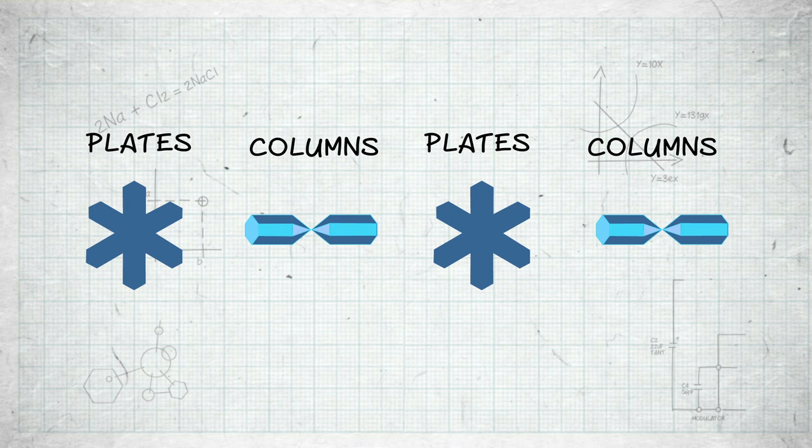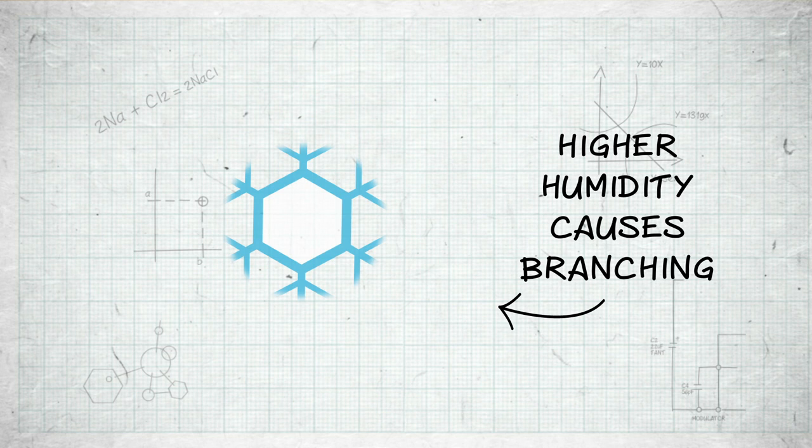Secondly, temperature. As the temperature increases, snowflake structure tends to go from plates to columns, then back to plates, and then back to columns again. But experts don't know exactly why this is. Changing conditions can lead to unusual shapes, such as induced side branching. So if the snowflake starts as a hexagonal plate, and then it moves into an area of high humidity, then branches will start to form.